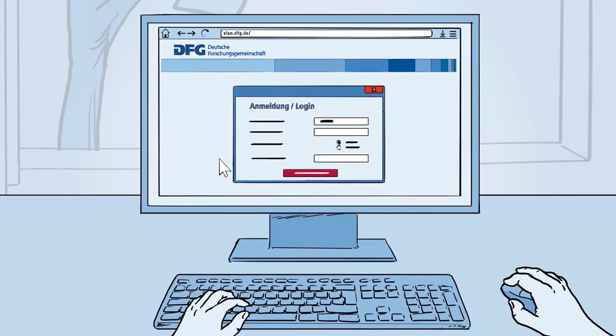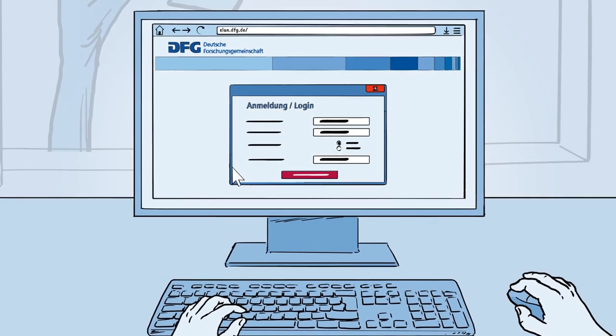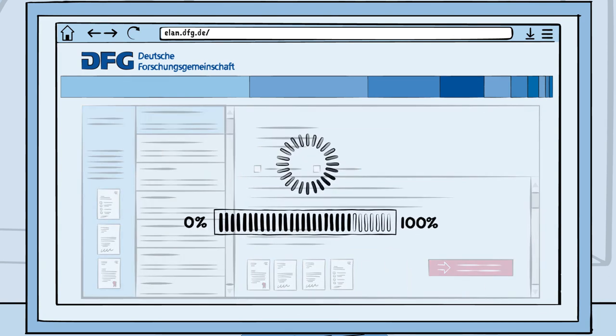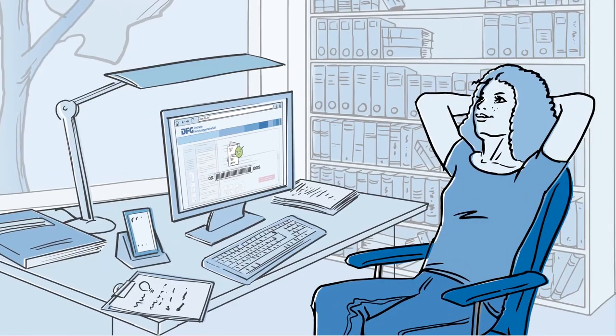Elena registers on the DFG application portal, Elan. She then enters all the details of her planned project and uploads the documents. She has submitted her proposal.